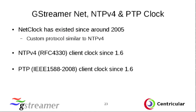Inside GStreamer, batteries included — we already have support for various protocols that allow you to share a clock over the network. Currently three different protocols are implemented. One is a custom GStreamer net clock that existed since 2005, working very similarly to NTP. Then, since mid last year, we have actual NTP protocol client-side support — there's an RFC for that. And since about half a year ago, we have support for PTP, the Precision Time Protocol, an IEEE standard, also with client support. All these clocks work exactly the same — switching from one to another is usually a one-line change, as they all provide the same interface.